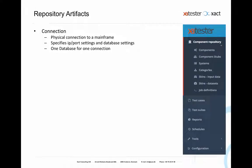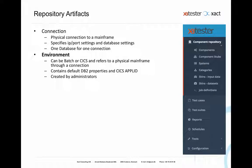Let's look at the repository and its artifacts. The lowest level artifact is a connection, which defines the physical connection to an LPAR: the IP address, port settings, and database settings. There is one default database per connection, which can be changed in a specific test case. The database is only used for SQL SELECT statements, not for executing programs. Then we have an environment, which is what you normally use when setting up a test case. A test case is targeted against an environment. An environment uses a connection and specifies whether it is a batch or CICS environment, with default values for DB2, CICS APPLID, and CICS channel. Connections and environments can only be created by administrators.